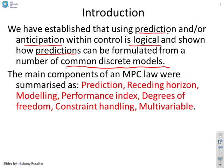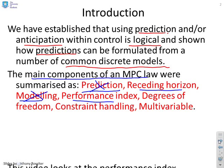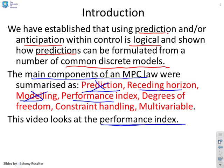Earlier on, what we said was the main components of a predictive control law were things like prediction, receding horizon, modelling, performance index, degrees of freedom, constraint handling and multivariable. Well, we've done prediction and we've implicitly done modelling in the earlier videos. So what we want to look at next is this concept of a performance index. What is it? How do we define it? How do we use it?